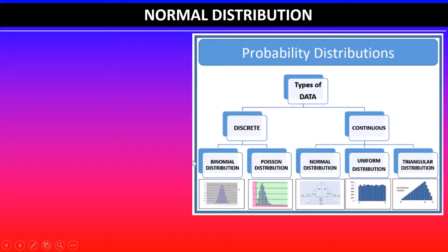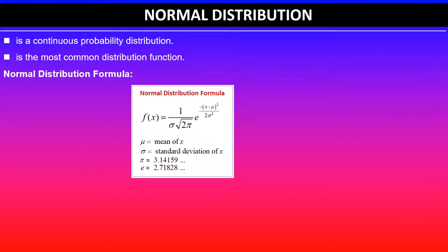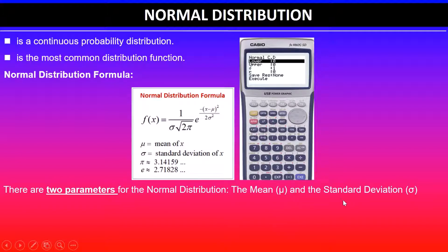Normal distribution is a continuous probability distribution, as shown on this flowchart, and it is the most common probability distribution function you will find. The normal distribution formula that models this distribution is given by the formula shown here. Because we'll be using a graphics calculator to work out probabilities, you don't need to memorize this formula. What the formula shows is that it needs two parameters: the mean (μ) and the standard deviation (σ) of the random variable x. We can rely on the graphics calculator to calculate the probabilities.